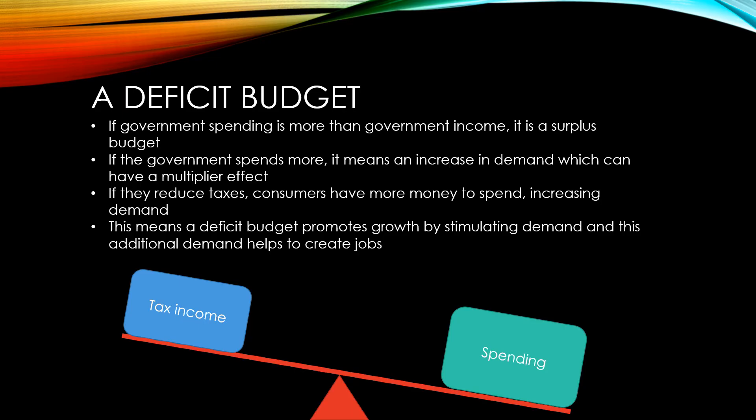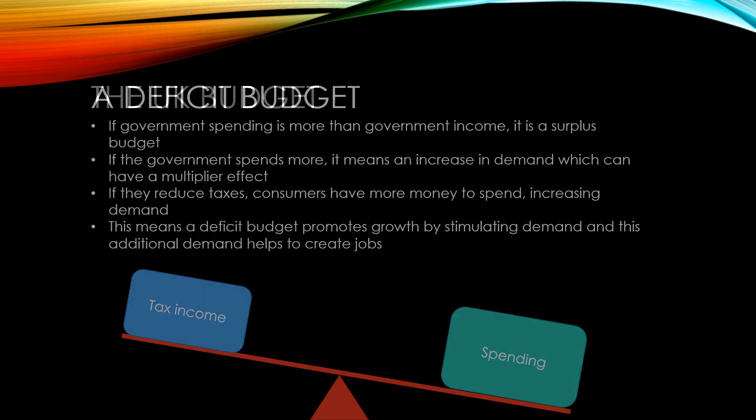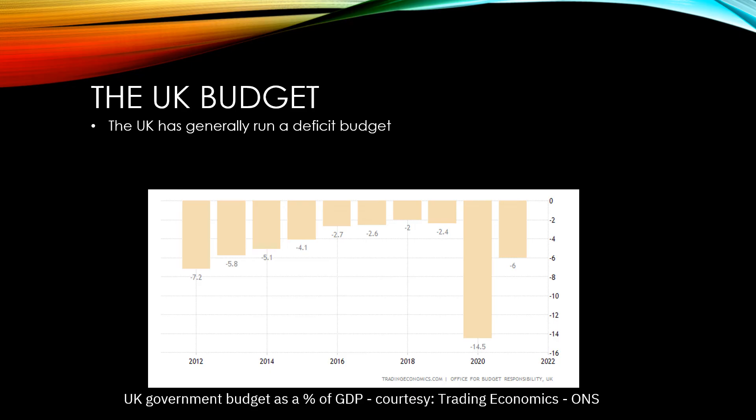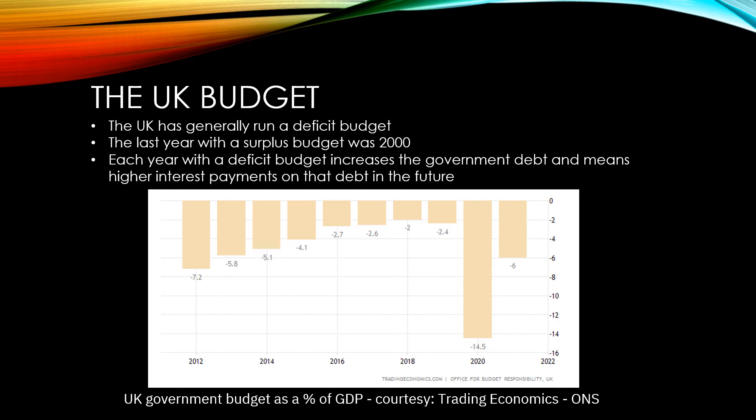A deficit budget works towards the government's other two objectives of economic growth and low unemployment. The UK has generally run a deficit budget — in fact, the last year with a surplus budget was the year 2000. Each year that we have a deficit budget, it increases government debt and means higher interest payments on that debt in the future. This graph here shows UK government budget as a percentage of GDP, which we'll discuss further in one of the next couple of videos.